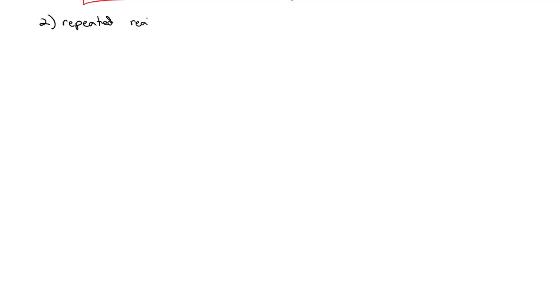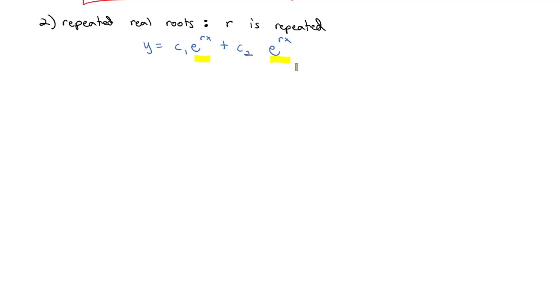That's probably not a very interesting example, so let's look at what happens when we have repeated real roots. If we've got a repeated root r, we get e^(rx) from it, but since r was repeated, that same function appears twice. The problem is these two functions e^(rx) are not linearly independent — they're exactly the same. So we need to make them linearly independent, and the way we do that is we multiply by x.